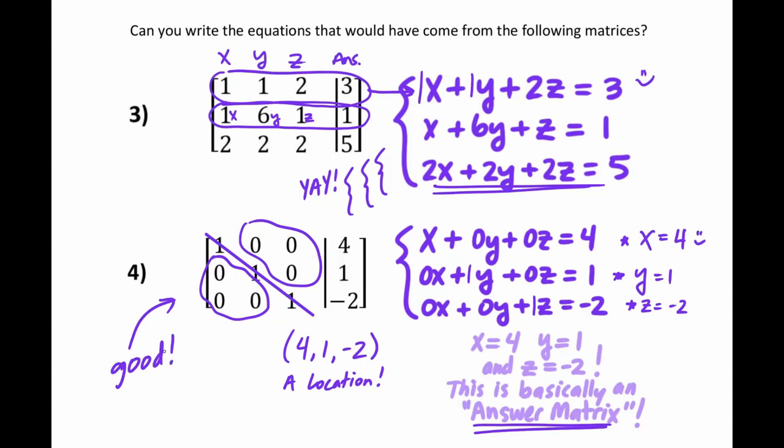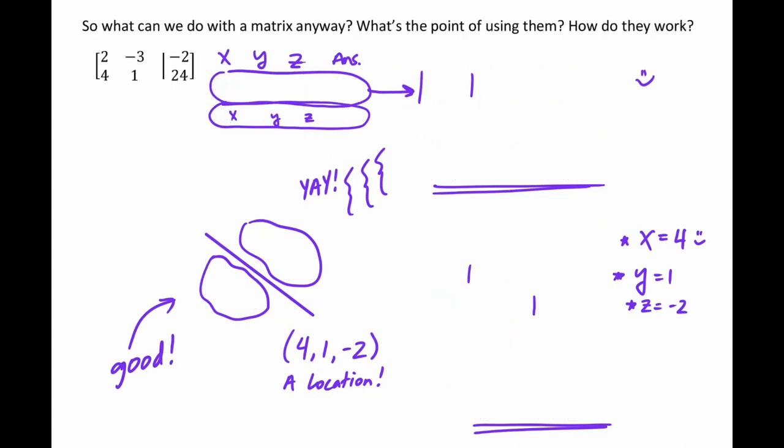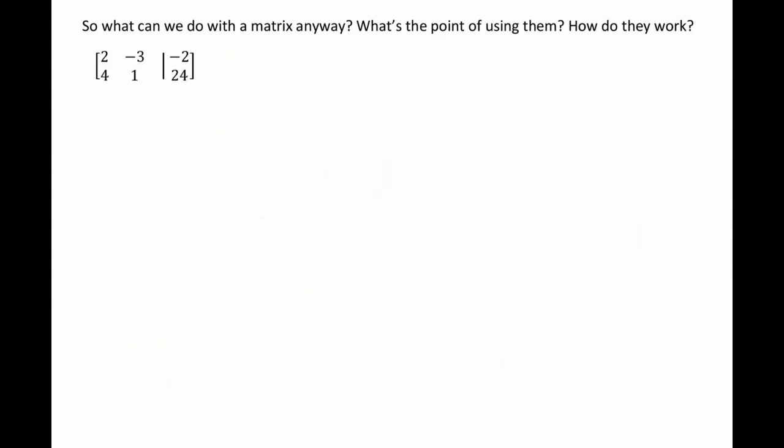So what can we do with the matrix anyway? And what's the whole point of using them? How do they work? So we're going to take this same question that we've been dealing with on substitution and elimination on this paper, and we're going to perform matrix operations. We're going to deal with it as a matrix and not as equations. So as an itty-bitty matrix, it'll look a little bit like two and then negative three and then negative two across the line. That's the top equation. And then we'll have four and one and 24 as the bottom row. 24 being on the other side of the line, the other side of the equals.